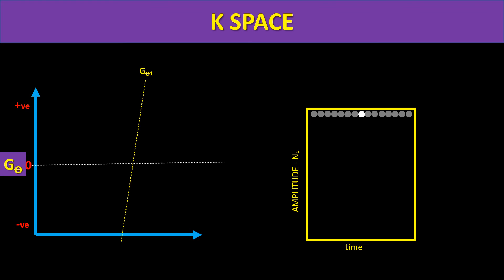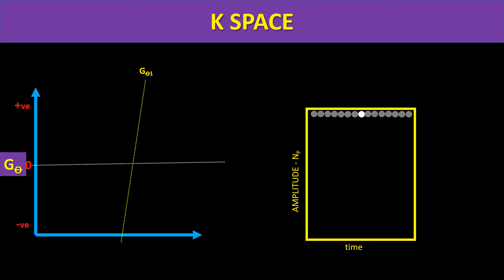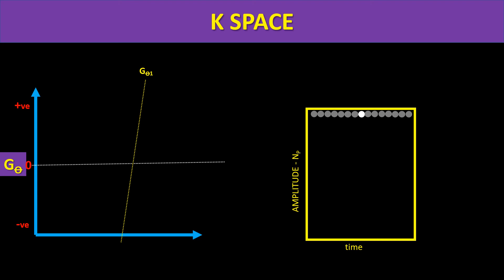Looking at the phase gradient steps — first, second, third, fourth, fifth, sixth — as we come to the middle of k-space, the phase gradient is least. Whenever a gradient is applied there is loss of synchrony and loss of energy, reducing amplitude. The first phase encoding step has maximum energy loss. Towards the middle of k-space, the energy loss is less. Towards the periphery, there is greater gradient and greater energy loss, so the center always has maximum amplitude.